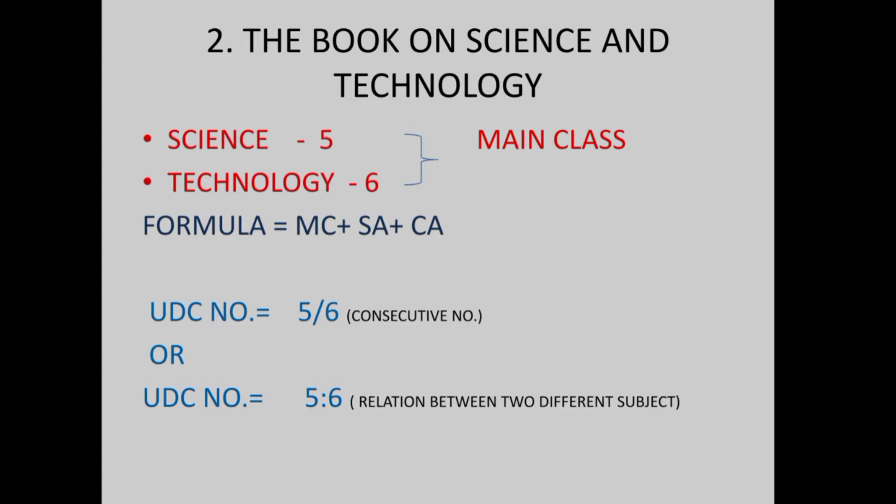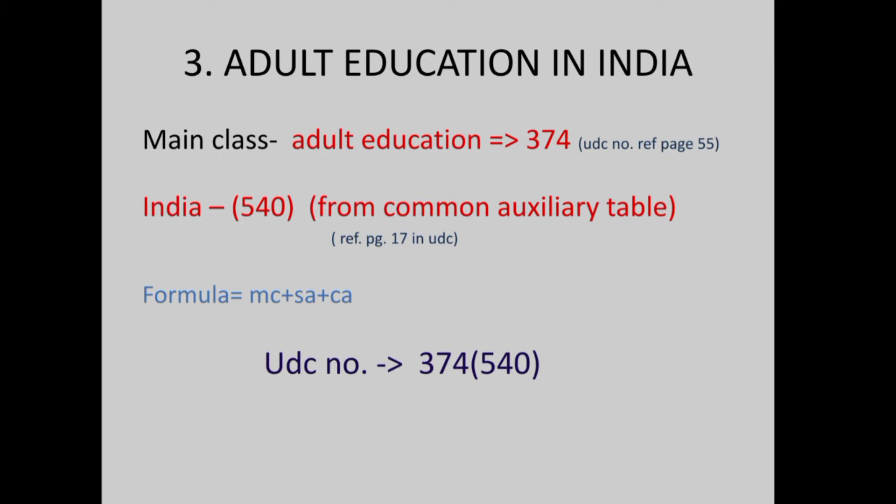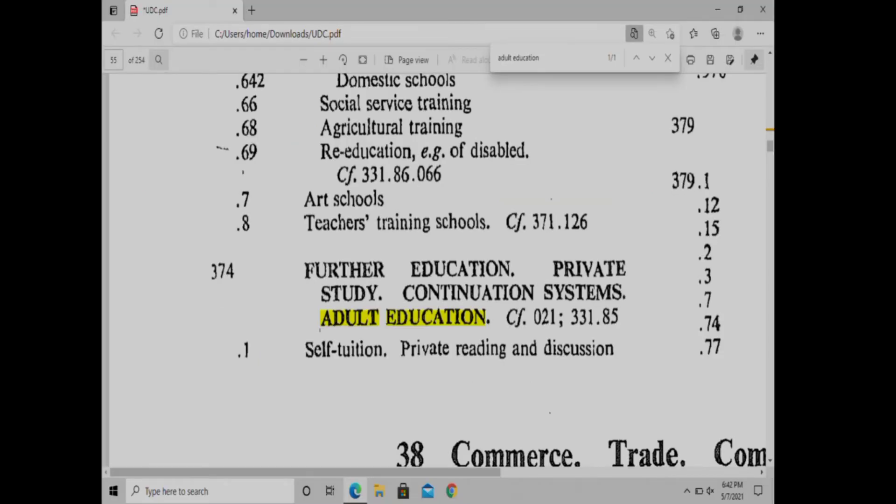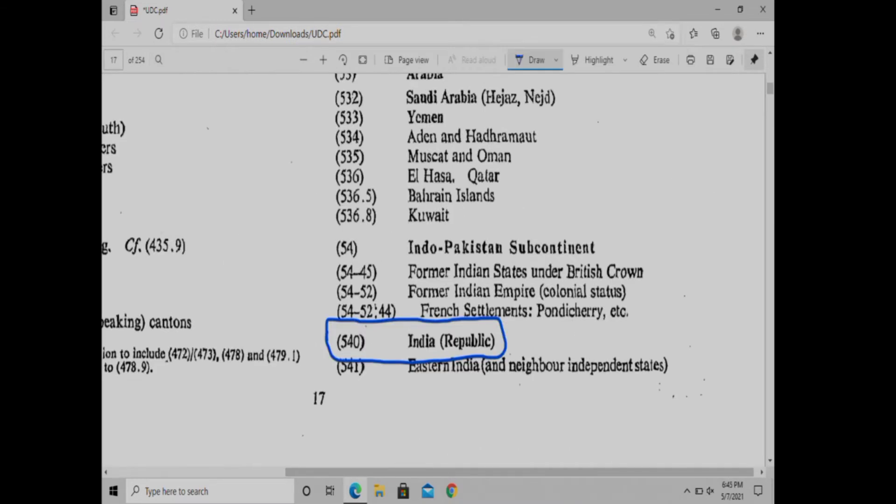Next is Adult Education. Adult Education — the class number is 374. Here is a place: India. That is the Common Auxiliary Table. Let's look at the Common Auxiliary Table. The auxiliary for India is 540.